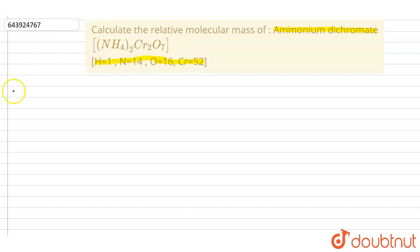Let's see the answer. Relative molecular mass of ammonium dichromate. What we will do is we will multiply each atom with its atomic mass and add all of them in the molecule.